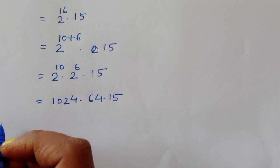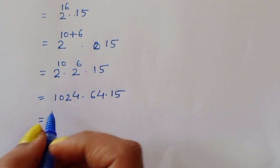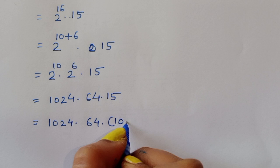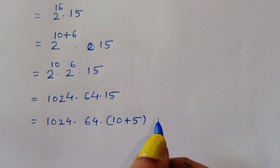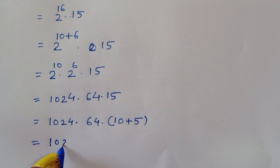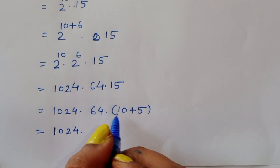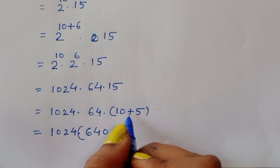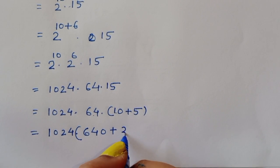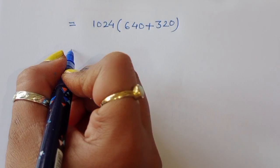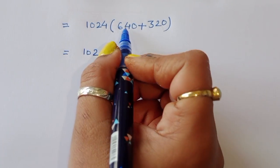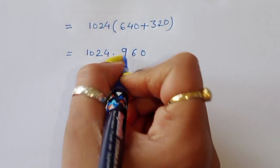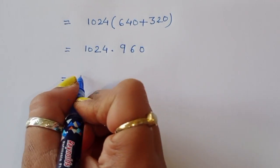Now we compute 1024 times 64 times 15. We write 15 as 10 plus 5. So 64 times 10 is 640, and 64 times 5 is 320. Adding these gives 640 plus 320 equals 960. So we have 1024 times 960.